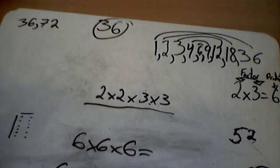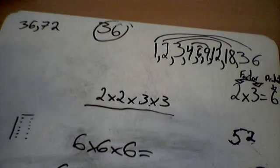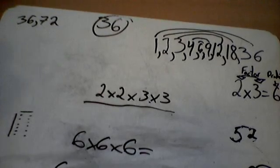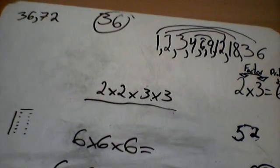So, 2 times 2 equals 4. 4 times 3 equals 12. And 12 times 3 equals 36.